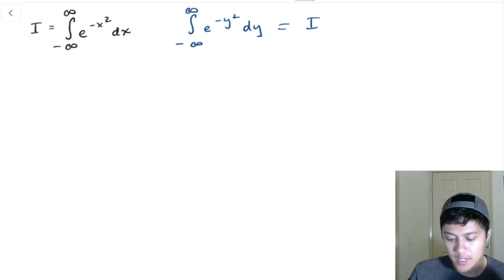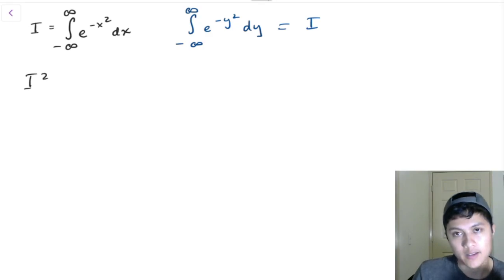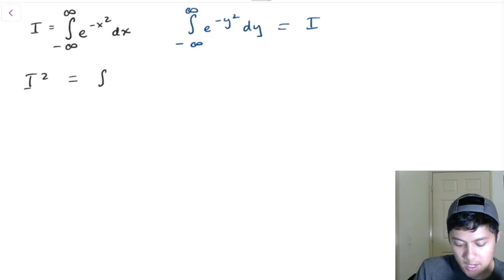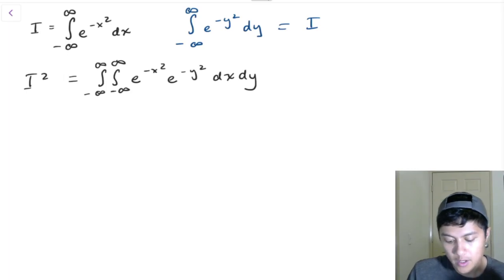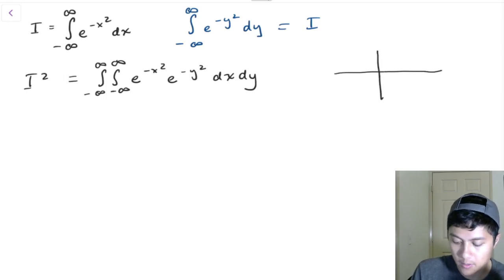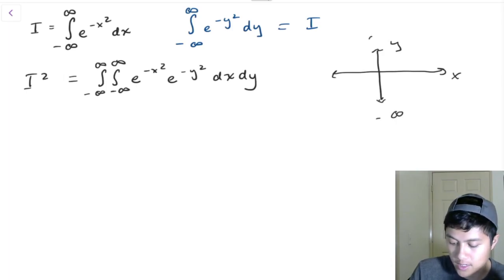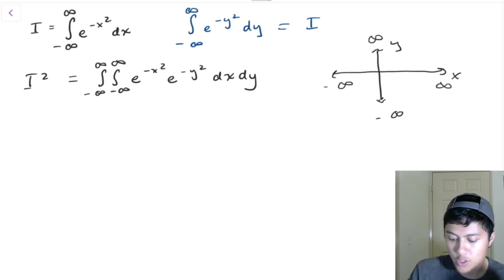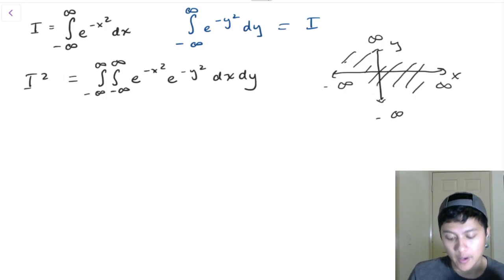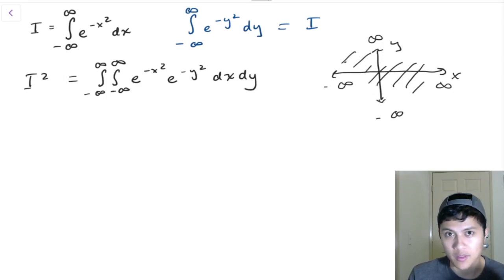Now what I'm going to do is look at i squared. So what does i squared look like? I multiply those two integrals together and I get a double integral from negative infinity to positive infinity, negative infinity to positive infinity, of e to the negative x squared times e to the negative y squared, dx dy. What I'm doing here is integrating the product of these two functions over the entire Cartesian plane, going from negative infinity to positive infinity in both directions. We can't really do it by normal Calc-2 techniques still.